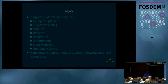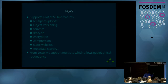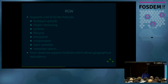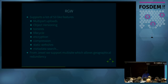Since the semantics of both APIs are completely different, you cannot upload an object with multipart in Swift and access it in S3. S3-like features include multipart uploads, object versioning, and downloading an object as a torrent. You have lifecycle policies that allow you to delete or expire objects, support for encryption, compression support from the Luminous release of CEPH, and you can host a static website. We now support metadata search with Elasticsearch. From the Jewel release, we have multi-site — basically geographically redundant CEPH clusters.